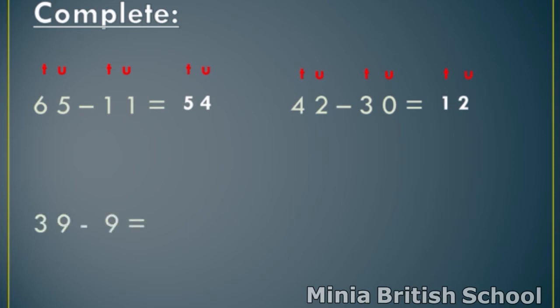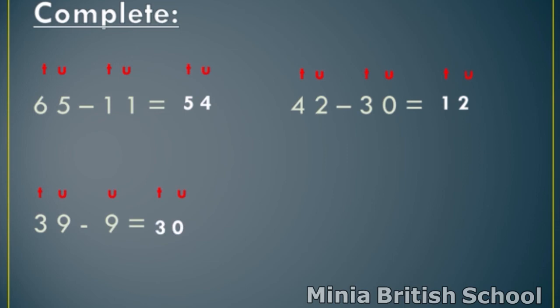Read: thirty-nine minus nine. Write T and U above thirty-nine. Number nine consists of one digit, so this number is units. Write U above nine. Write T and U above the answer space. Start from units. Nine minus nine — any number minus the same number equals zero. So, write zero under units. And in tens, I have only number three. Three minus nothing equals the same number. So, write three under tens. The answer is thirty.